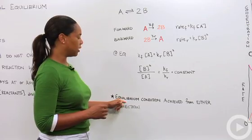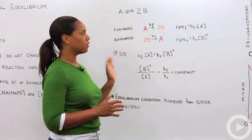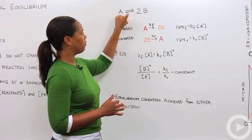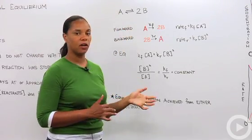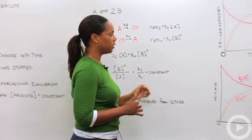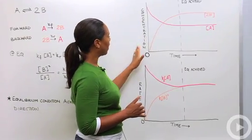The equilibrium condition can be achieved from either direction either going from reactants to products or products back to reactants so let's look at a graphical depiction of that.